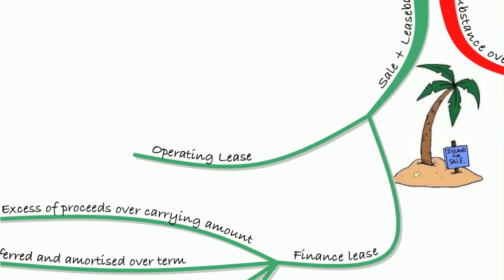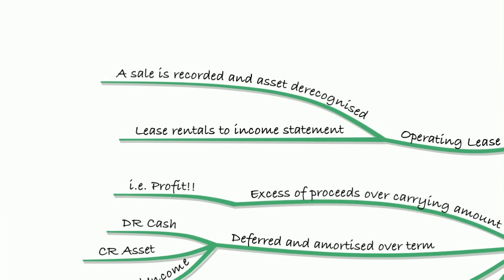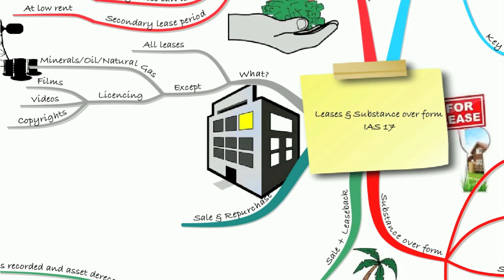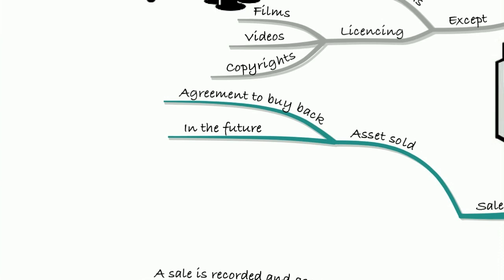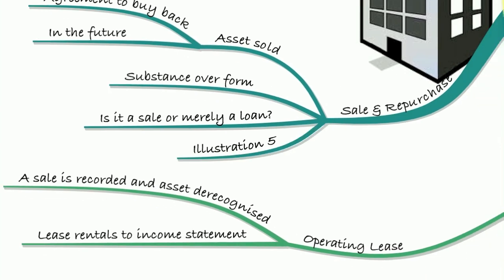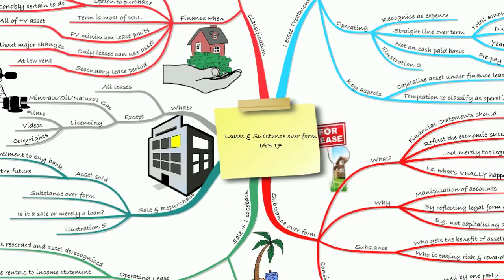Also be aware of sale and leaseback on an operating lease: the sale is recorded, the asset is de-recognised, and the lease rental is taken to the income statement as usual. Also look for instances of sale and repurchase of an asset, which may be an attempt to disguise a loan. The asset is sold with an agreement to buy it back in the future. Substance over form requires us to check whether this is a genuine sale or merely a loan, and if it is a loan we must treat it as such. We looked at that in Illustration 5.